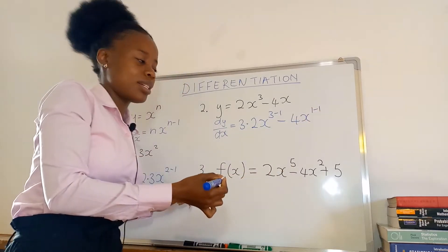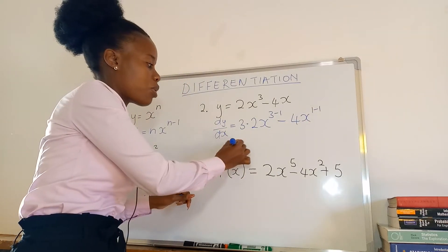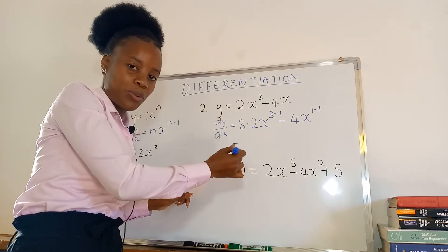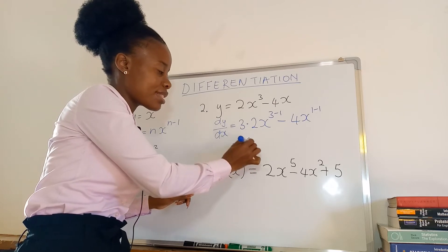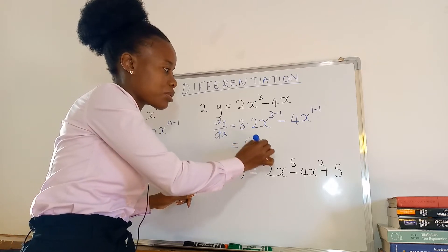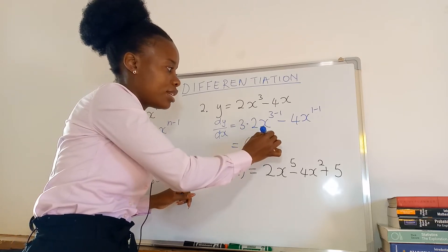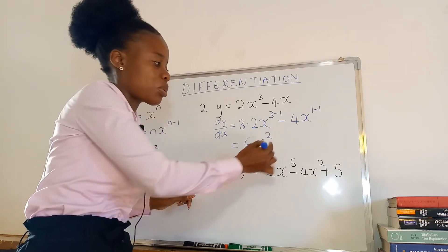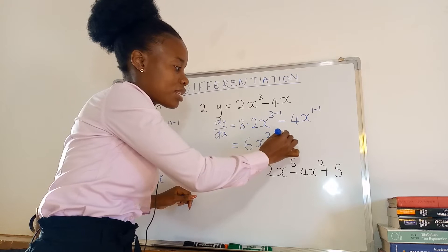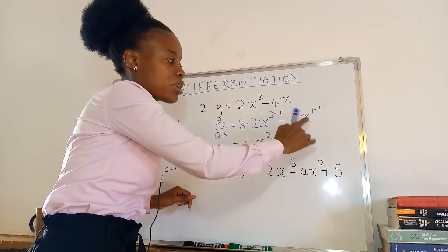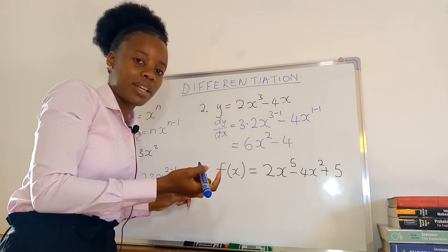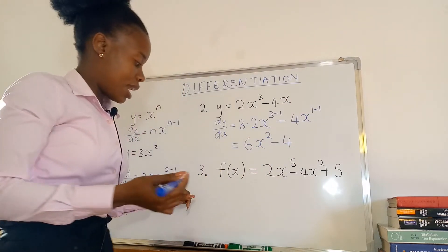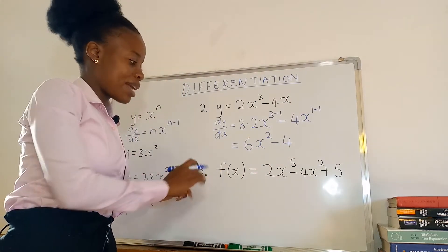So we get 6x squared minus 4, because x to the power zero is one.